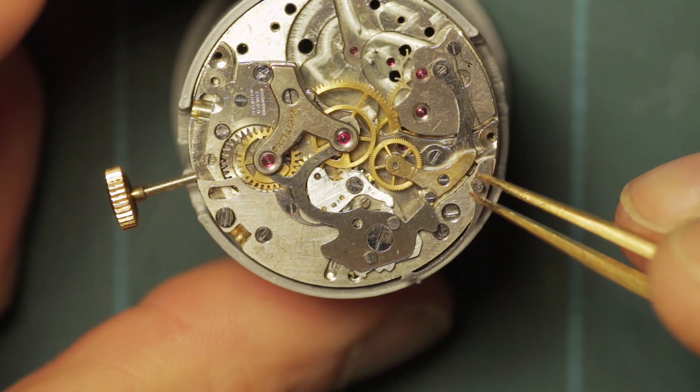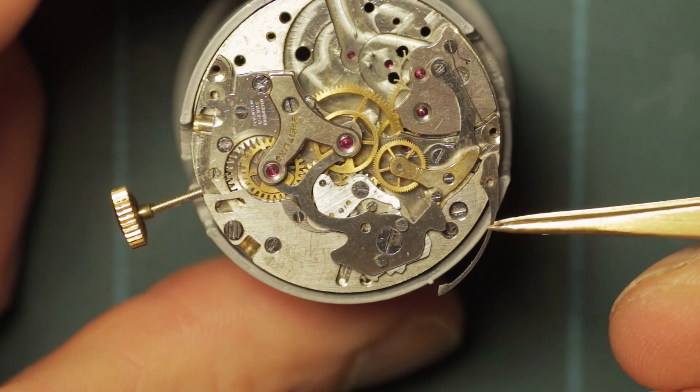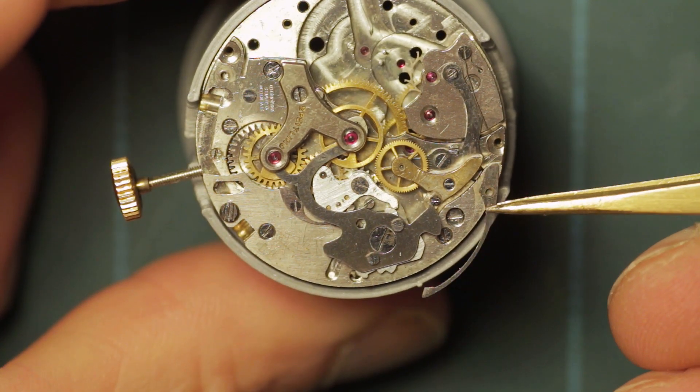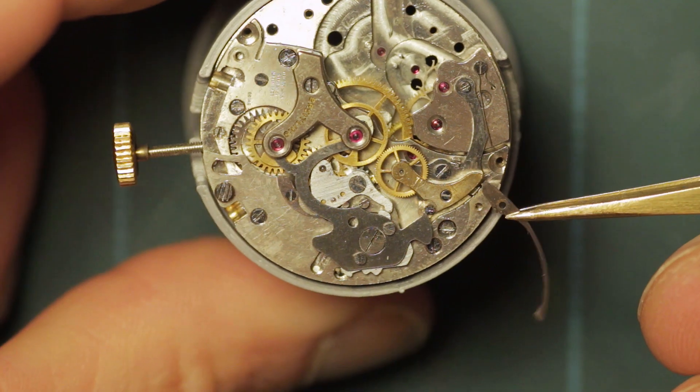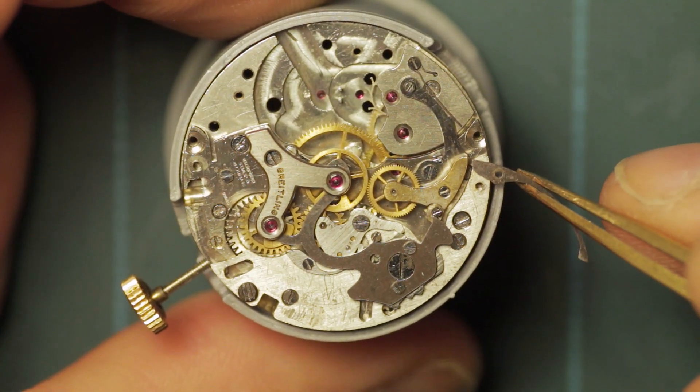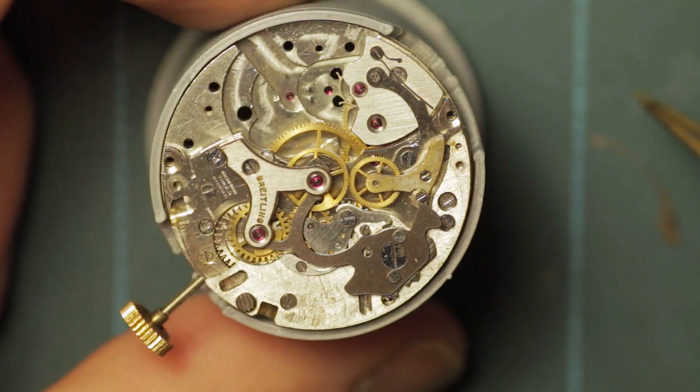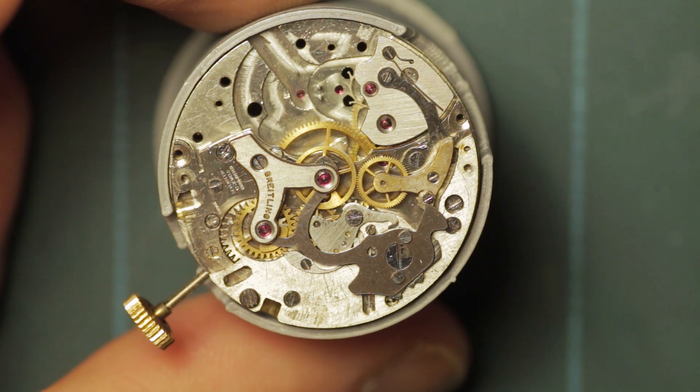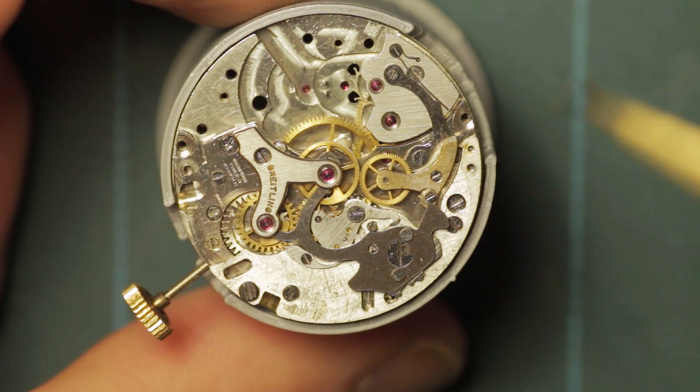Next to be removed is the hammer spring. This spring engages in the notches that you can see on the bottom of the plate there.